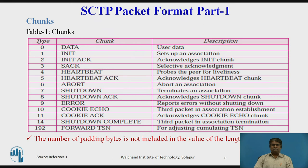The table shows a list of chunks and their descriptions with type numbers. For example, type 0 is the data chunk which carries user data. Type 2 is init ACK, which acknowledges init chunks. Type 4 is heartbeat, which probes the liveliness of the pair. Type 7 is shutdown, which terminates the association. Note that the number of padding bytes is not included in the value of the length field.